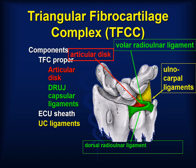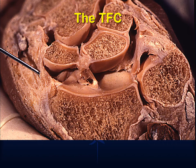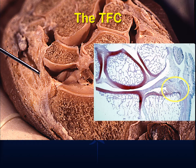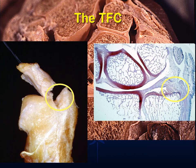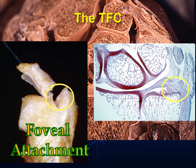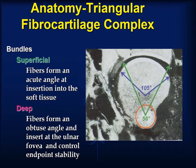As far as soft tissue constraints, the triangular fibrocartilage complex plays a major role. It consists of the articular disc, the dorsal and volar radial ulnar ligaments, the ulnar extrinsic ligaments, and the extensor carpi ulnaris and its underlying sheath. The triangular fibrocartilage arises from the medial aspect of the radius and travels to a dual insertion in the soft tissue and foveal area of the ulna. It is this foveal insertion of the deep fibers which plays a major role in anchoring stability. The superficial fibers form an acute angle and insert into soft tissue, while the deep fibers form a broader angle and insert into the ulnar fovea, thus controlling endpoint stability.